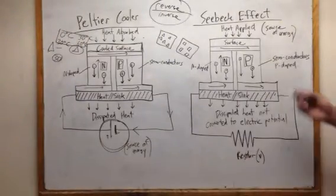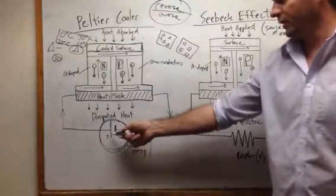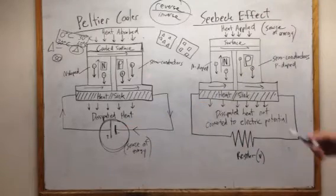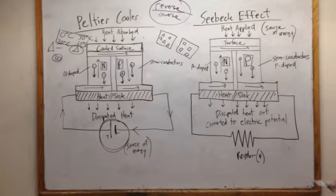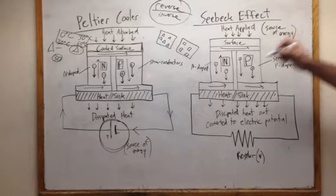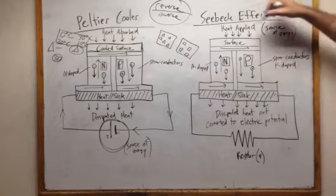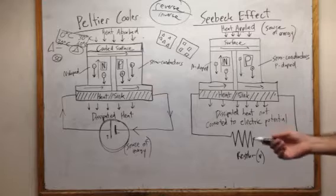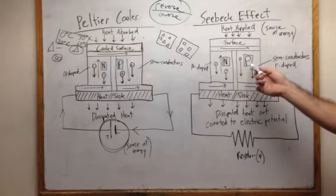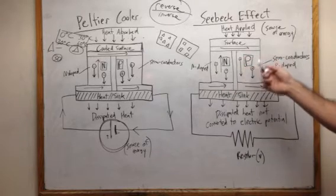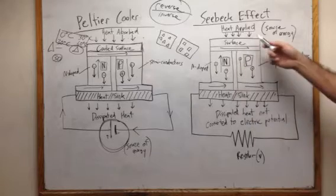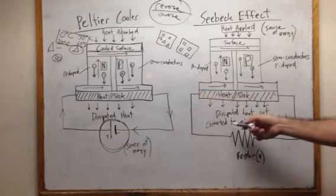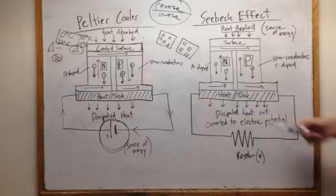In the reverse, if you'll notice, the source of energy on the Peltier cooler is electrical current. But the Seebeck effect is the inverse of that. The source of energy for that is heat. So something being hot. And given the same exact conditions, you have two semiconductors which are doped differently, will allow electrical current to flow. And the dissipated heat on this side that is not converted to electrical potential releases heat.